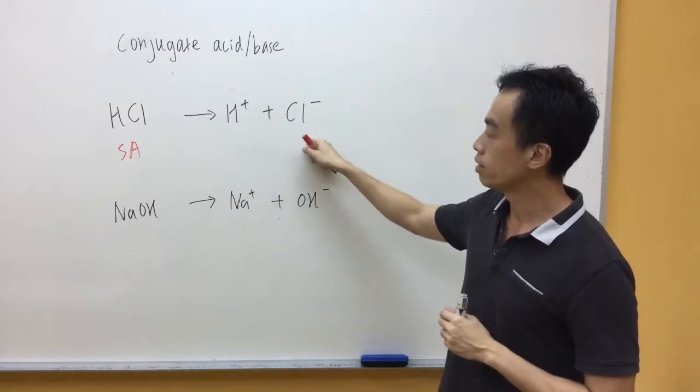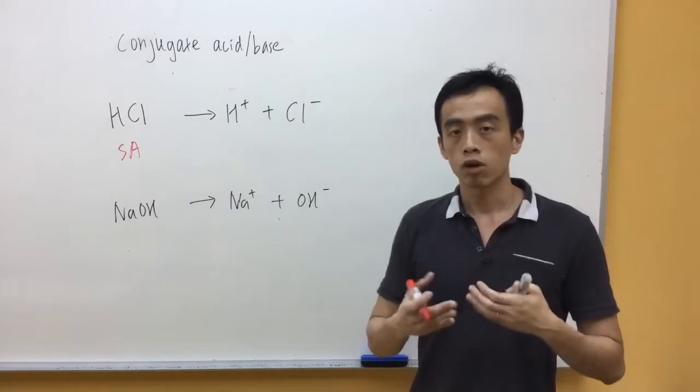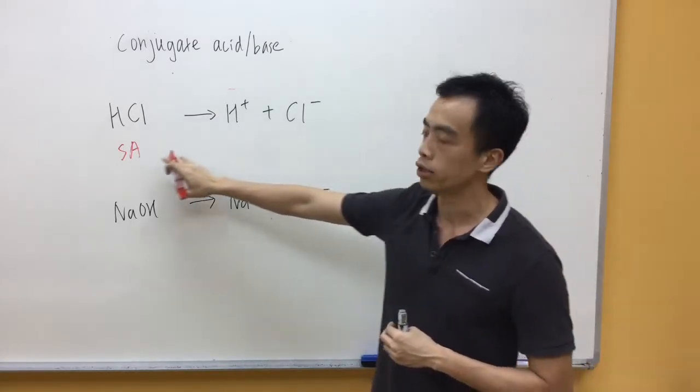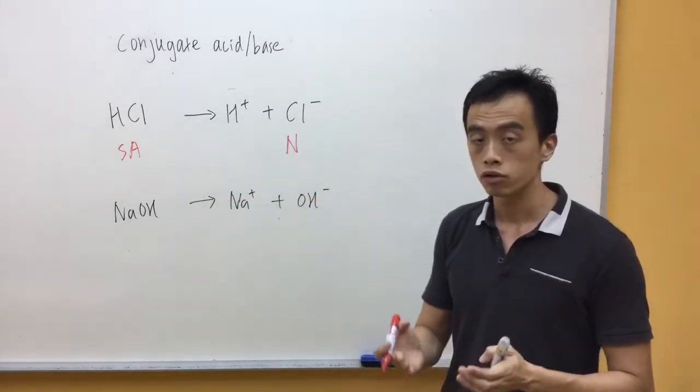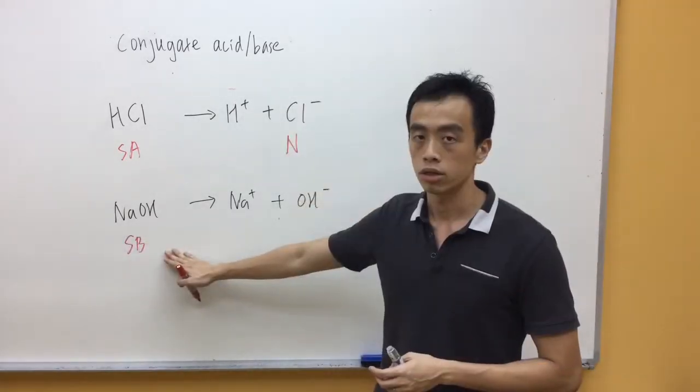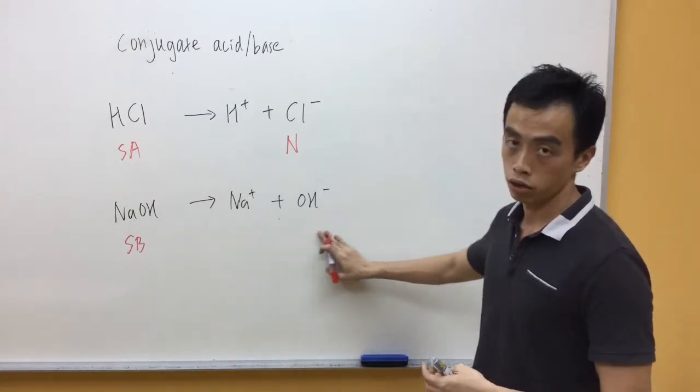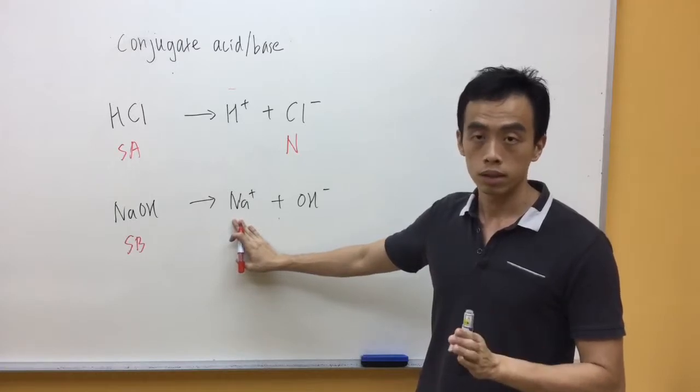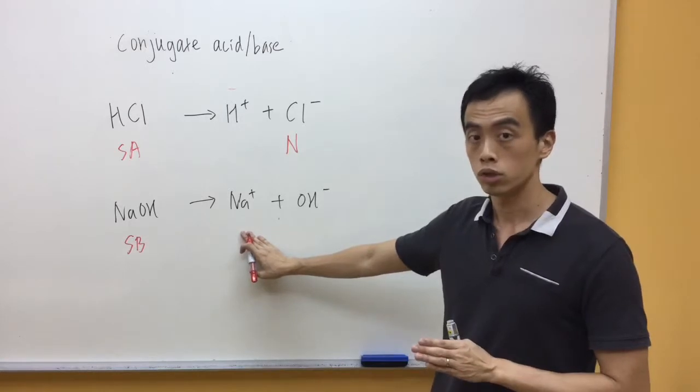So, Cl- doesn't accept H+, so Cl- is actually not a base. So, in terms of concept, it's easier to just quantify the counter ion formed by my strong acid is neutral. Now, similarly, for strong bases, the idea is the same. So, sodium hydroxide is a strong base. Dissociates fully in solution, giving Na+ and OH-. Now, if you consider Na+, Na+ is stable. It doesn't have any tendency to form back NaOH. So, this guy is also neutral.